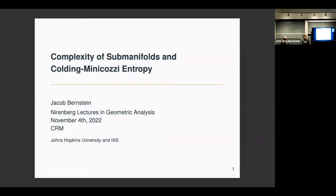Today we are here for the last of four lectures in 2022. Two of the lectures were given by Professor Lu Wang from Yale, and the last two by Professor Jacob Bernstein from Johns Hopkins, who will give today's lecture — a general audience lecture on complexity of submanifolds and the Colding-Minicozzi entropy. Professor Bernstein received his PhD in 2009 at MIT and has been a professor at Johns Hopkins since 2012, well known for contributions to minimal surface theory and mean curvature flows.